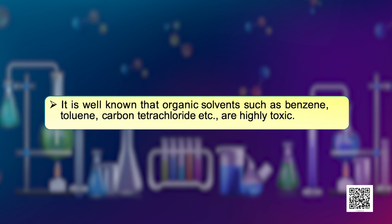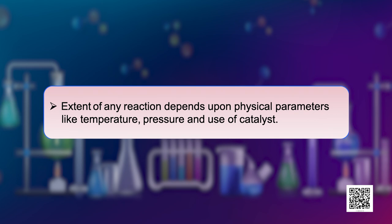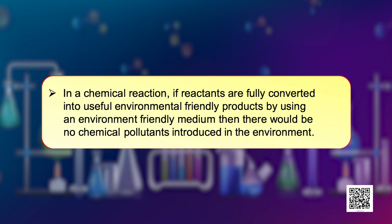It is well known that organic solvents such as benzene, toluene, carbon tetrachloride, etcetera are highly toxic. One should be careful while using them. You also know that a chemical reaction involves reactants, reagents and the medium in which the reaction is taking place. The extent of any reaction depends upon physical parameters like temperature, pressure and use of catalyst, etcetera. In a chemical reaction, if reactants are fully converted into useful, environmentally friendly products by using an environment friendly medium, then there would be no chemical pollutants introduced into the environment.